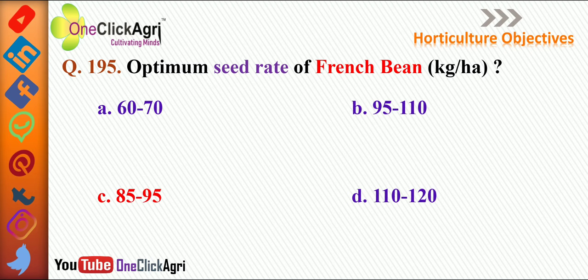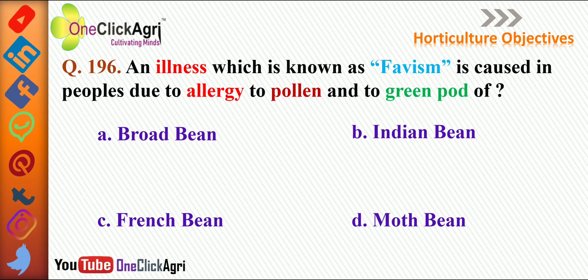An illness known as Favism is caused in people due to allergy to pollen and to the green pod of broad bean. The right answer is broad bean.